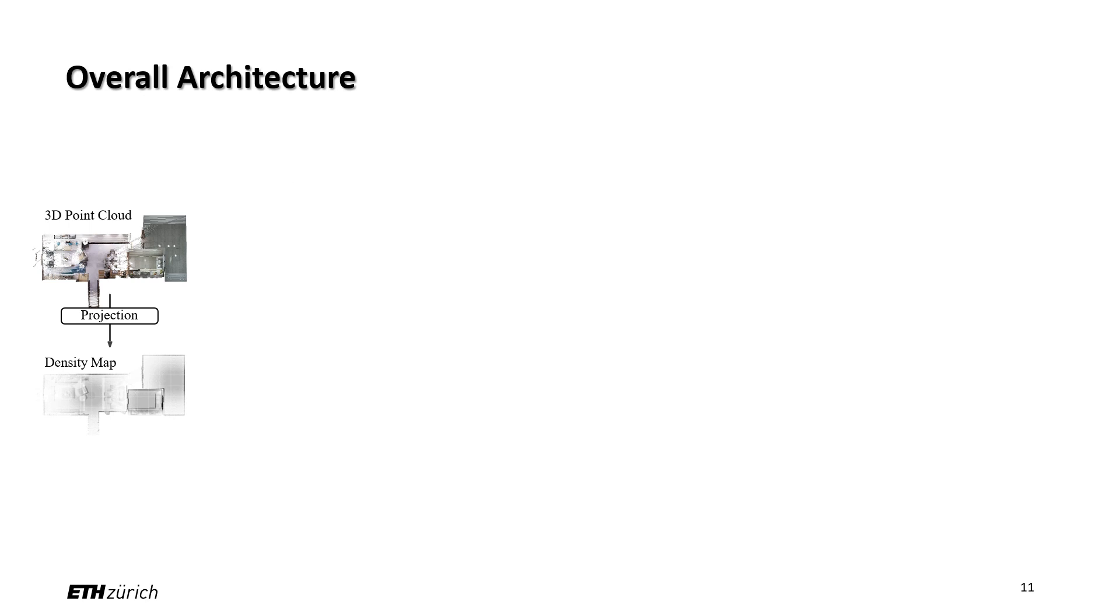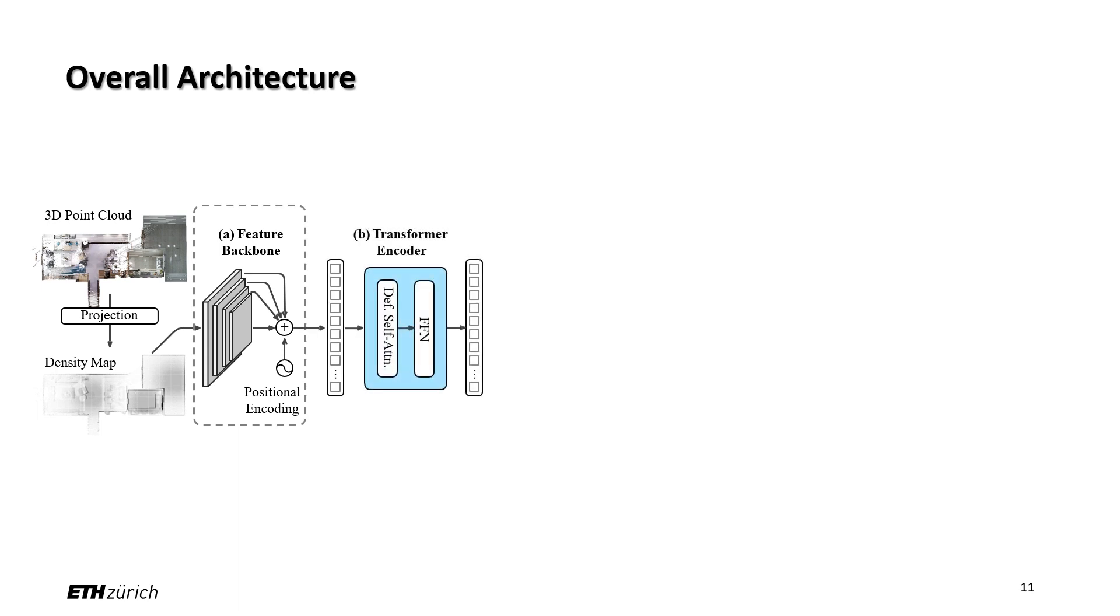Here is our overall architecture. Given a bird's eye view density map of the input point cloud, we first use a CNN backbone to extract multi-scale features, supplement them with positional encodings, and flatten them into a feature sequence. A transformer encoder takes as input the position-encoded feature maps and outputs enhanced features.